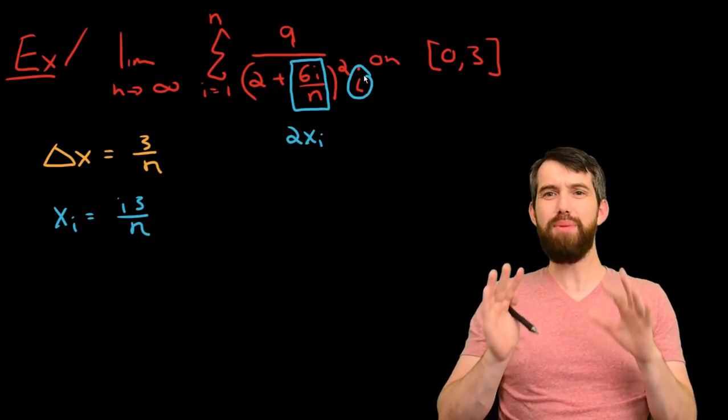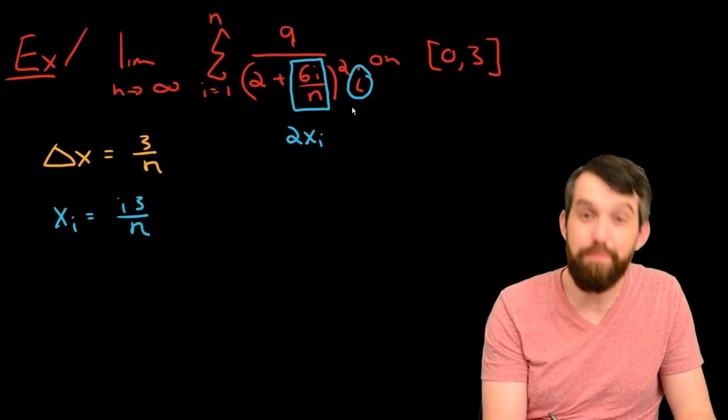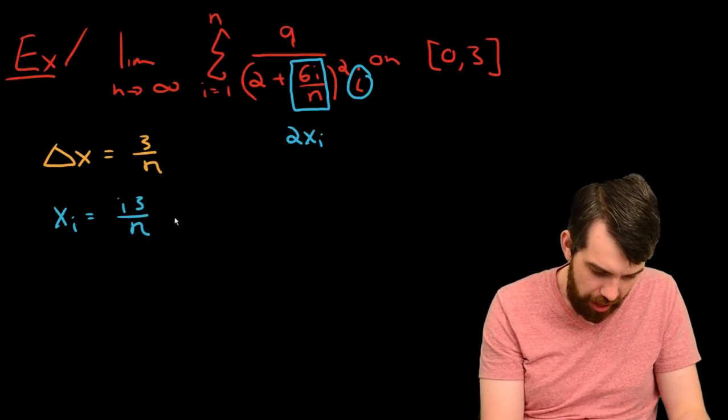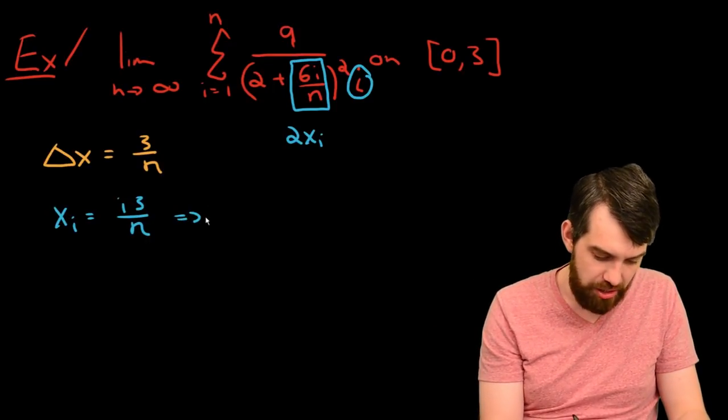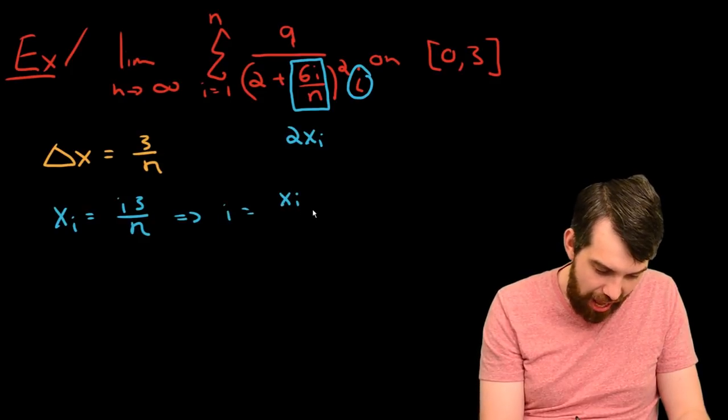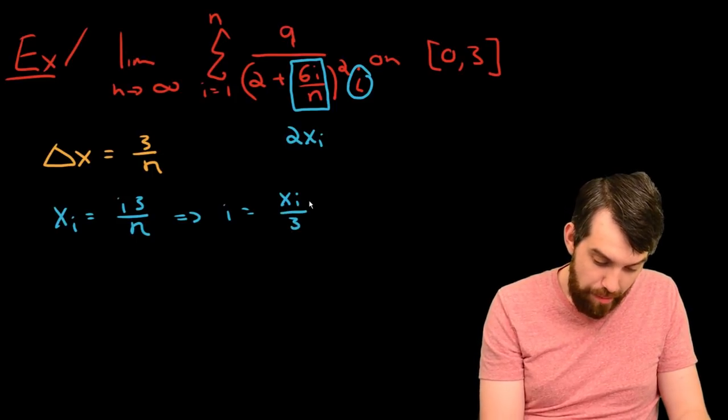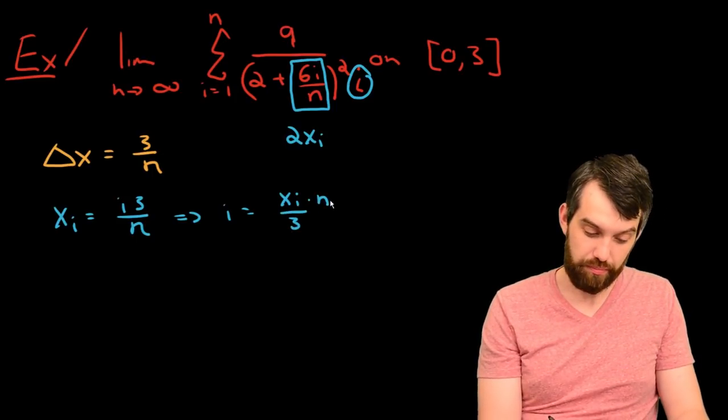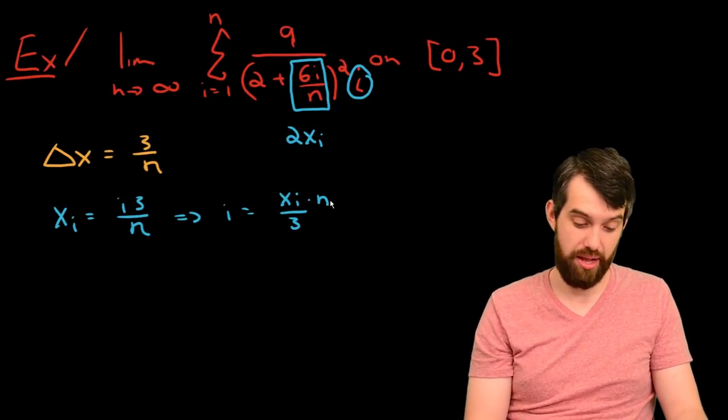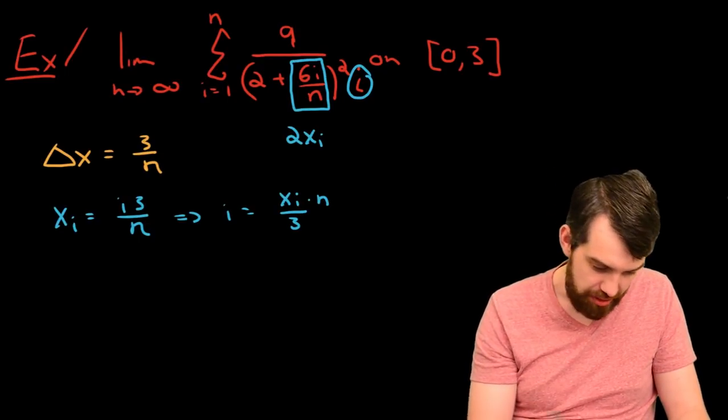Now, what I think I'm going to do is that if I look at the formula x_i equals i times 3 over n, look, I just have this i by itself, so why don't I try and identify what i is supposed to be here. So i is going to be equal to x_i divided out by 3 and multiplied by n. So that's a formula, and I can take this and I can substitute it in. Let's see what happens.